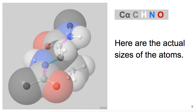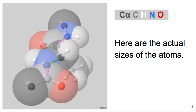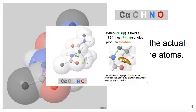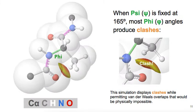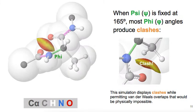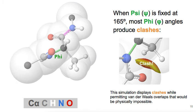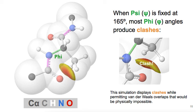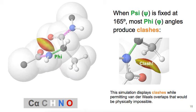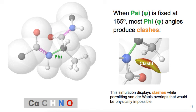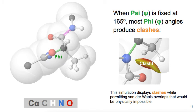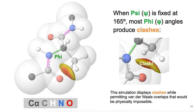Here the psi angle is fixed at 165 degrees. And we're rotating the phi angle a full turn through 360 degrees. As the atoms get close to each other and begin to overlap, which would be physically impossible, but is allowed in this model...